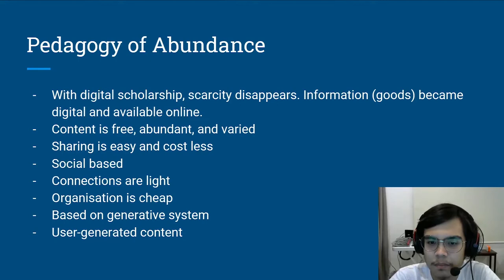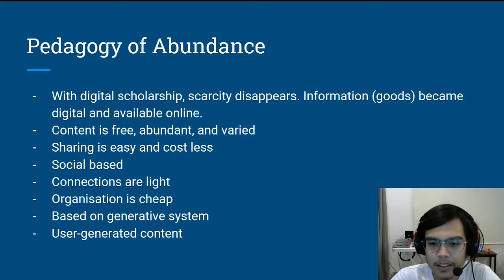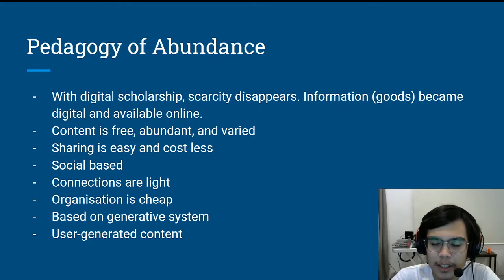Due to this pedagogy of abundance of information, some assumptions can be made. Content is free, meaning it costs less — not always free, but it costs less. Content is abundant, with a varied amount available. These types of content can be clearly seen in open access journals, wherein they are free and vary according to discipline. There is also ease of sharing, meaning it is easier to share among peers and colleagues, which makes the pedagogy of abundance more socially based.